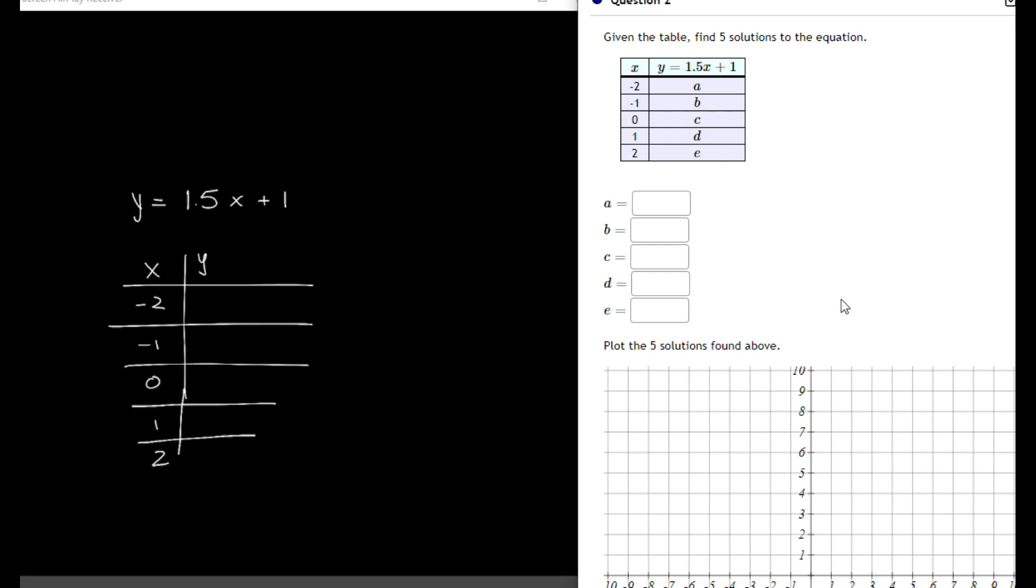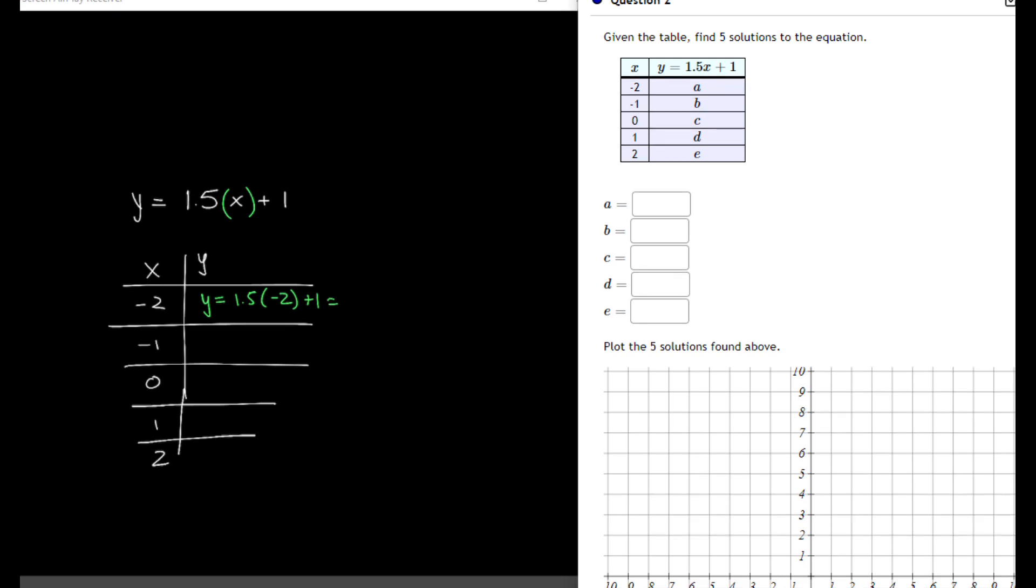So to go through and do that for the first equation, that tells me I have my y value. I take whatever my x is and plug it inside here. So that tells me y equals 1.5 times negative 2 plus 1, and that equals negative 2.